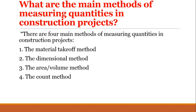What are the main methods of measuring quantities in construction projects? There are 4 main methods: 1. The material takeoff method, 2. The dimensional method, 3. The area volume method, 4. The count method.